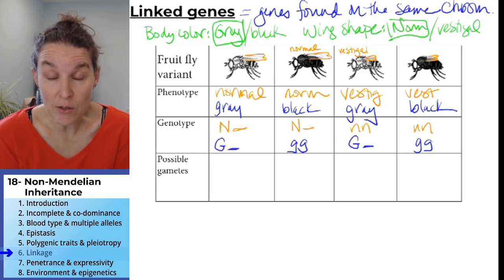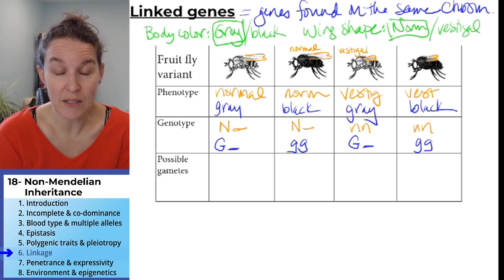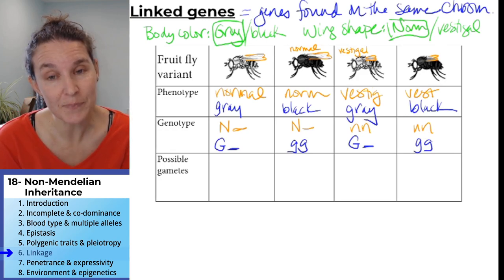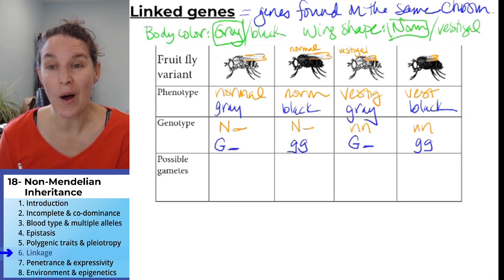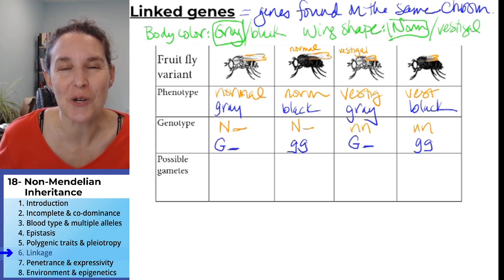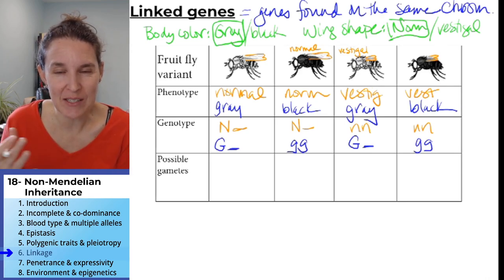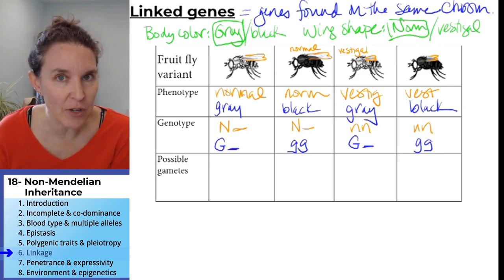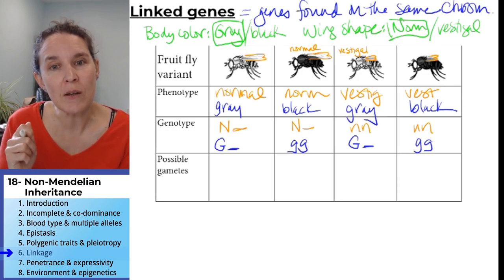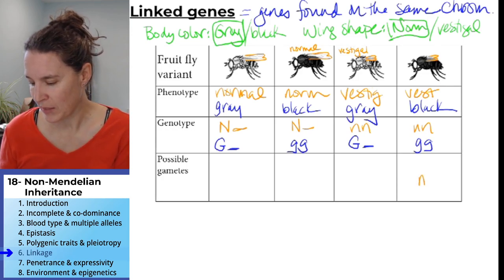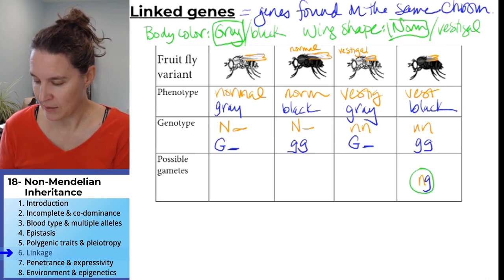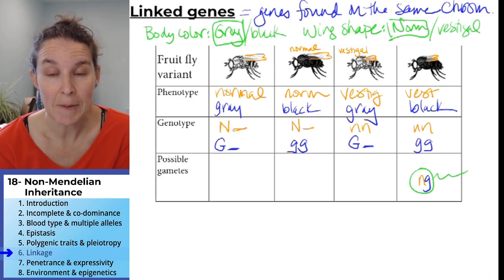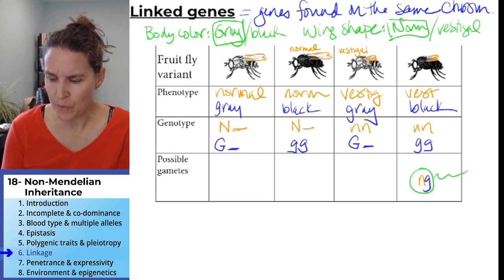We've just identified the genotype of each one of these flies. Now, for possible gametes: in every situation where we have an unknown allele, we can't determine the gametes for certain. The only gametes we know for sure are from the homozygous recessive fly — all of its gametes will have little n and little g.